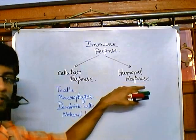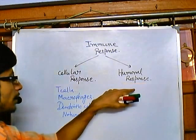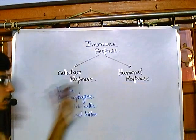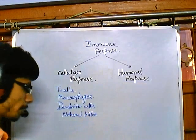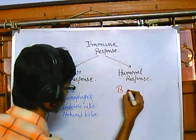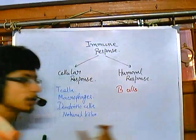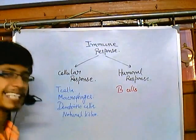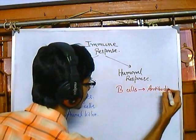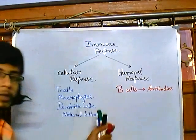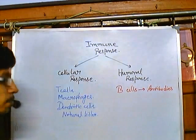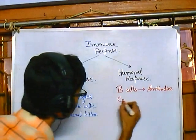On the other hand, in the humoral type of response, this is not directly mediated by cells, but in some way it depends upon cells like T helper cells for proper function. Among the humoral part, this depends upon cells called B cells, because B cells are going to produce antibodies. And also there are components called complement.